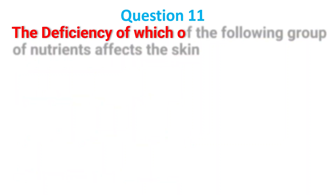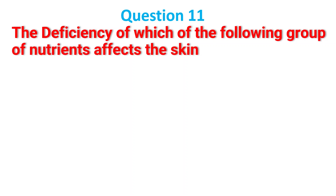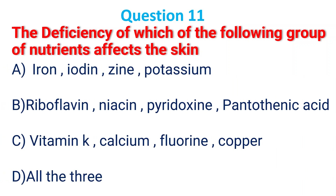Deficiency of which of the following group of nutrients affects the skin? A. Iron, iodine, zinc, potassium; B. Riboflavin, niacin, pyridoxine, pantothenic acid; C. Vitamin K, calcium, fluorine, copper; D. All of the three. The answer is B, riboflavin, niacin, pyridoxine, pantothenic acid.